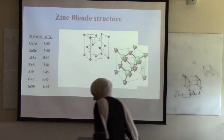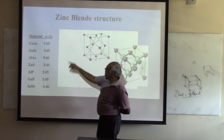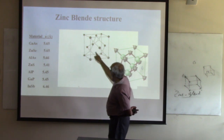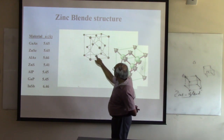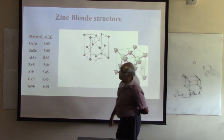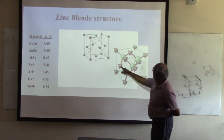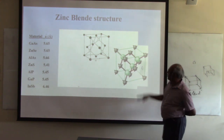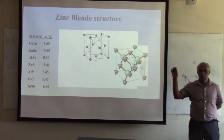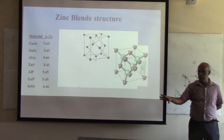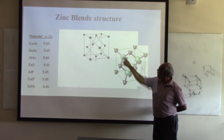There are many materials with zinc blende structure — gallium arsenide is a famous one. Diamond structure has two FCC lattices with a two-atom basis where both atoms are the same element. In diamond, both atoms are carbon. In zinc blende, one is gallium and the other is arsenic — they are offset by one-quarter of A in each direction.